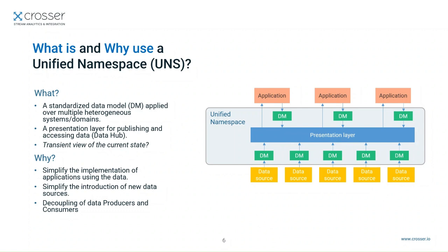You can introduce new producers of data, new data sources, without having to change any of your applications. They can immediately start using this new data that the new producers are delivering without needing to change the applications. You can also add new applications without affecting existing applications or any of the data sources you have available. Simplification of the use of data is the main reason for creating a Unified Namespace.